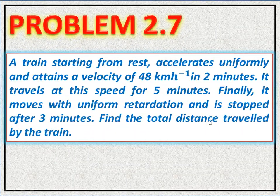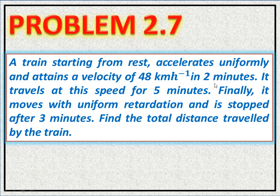Problem 2.7: A train starting from rest accelerates uniformly and attains a velocity of 48 km per hour in two minutes. It then travels at this speed for five minutes.